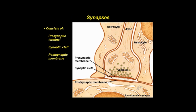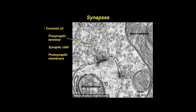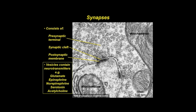Most synapses in humans involve chemical neurotransmitters, which are released from presynaptic terminals of one axon or dendrite into a synaptic cleft to affect receptors on the postsynaptic membrane of the target cell. Seen by TEM, vesicles fill the presynaptic terminal, and the postsynaptic membrane typically contains a thickened density. Various neurotransmitters include glutamate, epinephrine, norepinephrine, serotonin, and acetylcholine. In functional terms, two main types of synapses occur: excitatory and inhibitory.